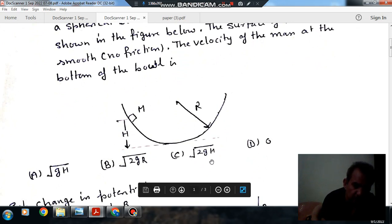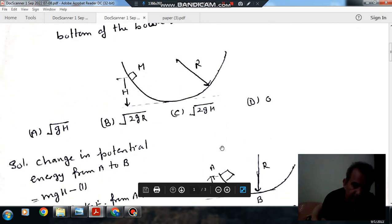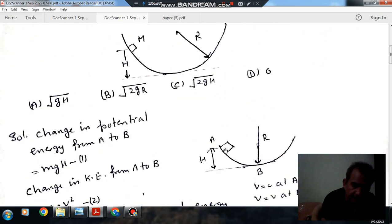Option C, root 2GH; and Option D, zero. So this is the height H given, this is the radius of the bowl. This point is A and this is B. When this mass moves